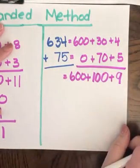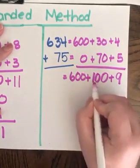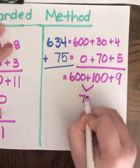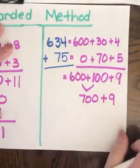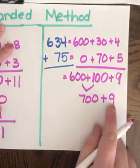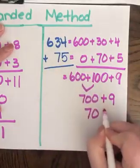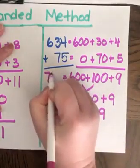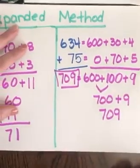Alright, so looking at my equation I can see that I can combine two numbers automatically. So I know 600 plus 100 is going to give me 700. So I have 700 plus 9. So I know I have no ones in 700. I'm just going to move that 9 over and it's going to give me 709 for my answer. That's it.